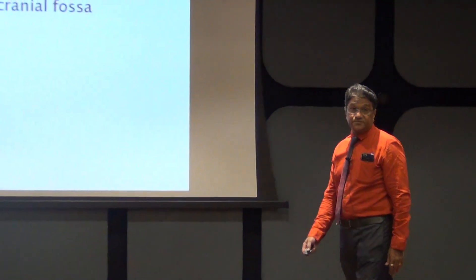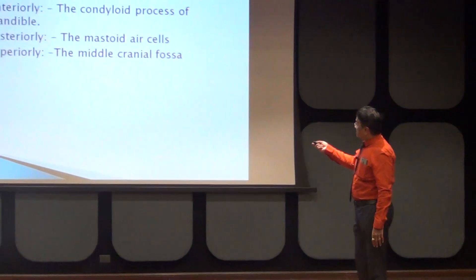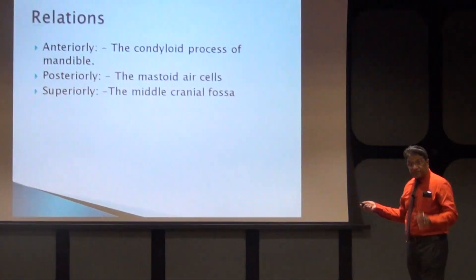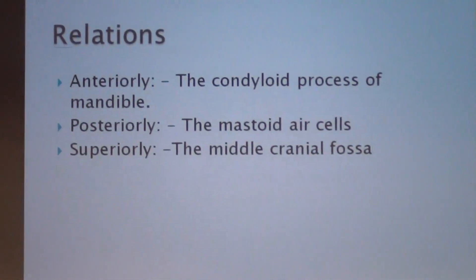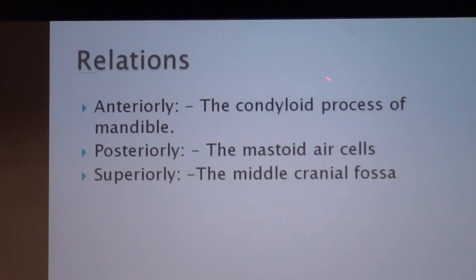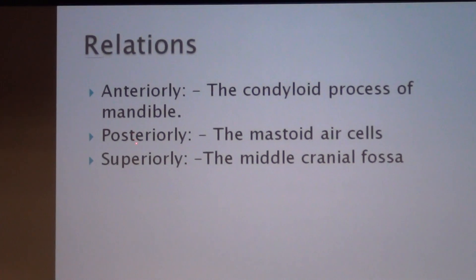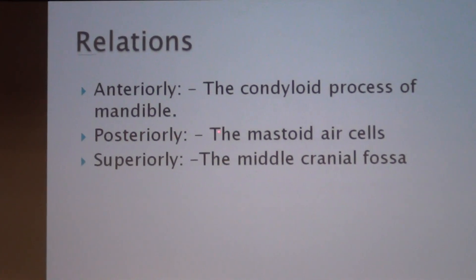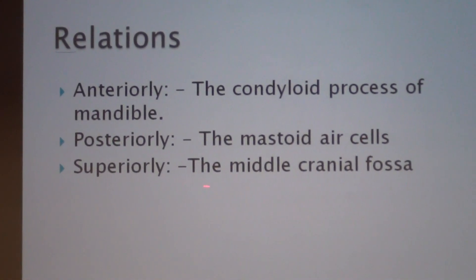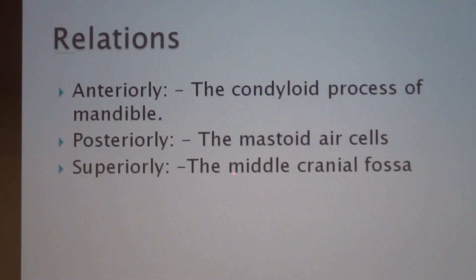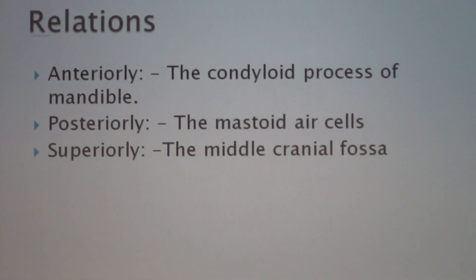Relations: The external acoustic meatus is related anteriorly to the condylar process of the mandible, posteriorly to the mastoid air cells, and superiorly to the middle cranial fossa.